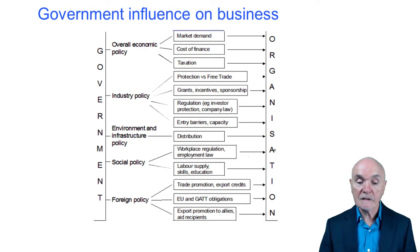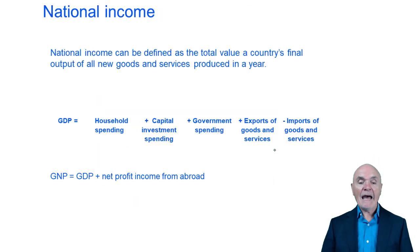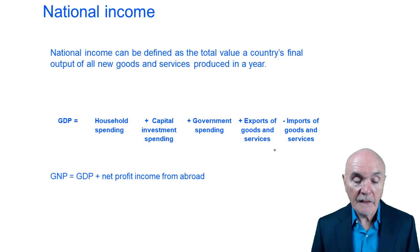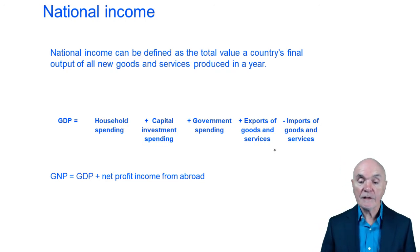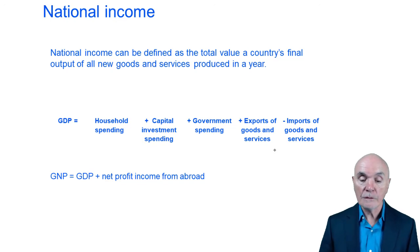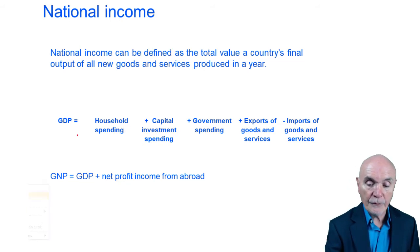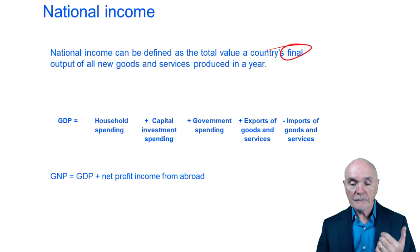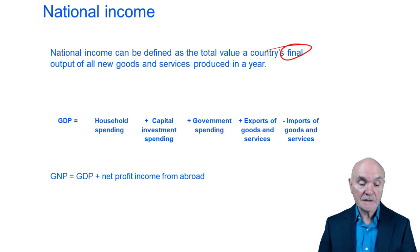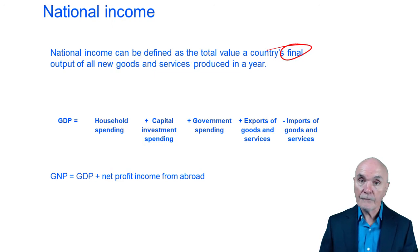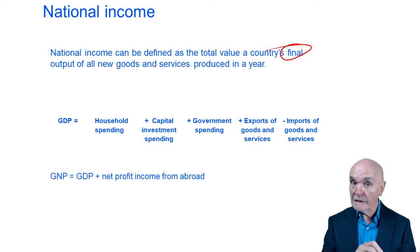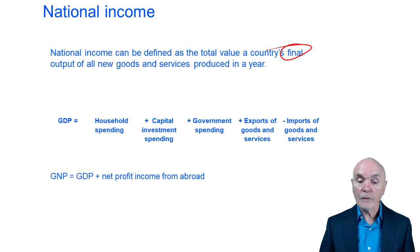So there's a myriad of ways in which the government can influence the economy and businesses. Now, how is income measured? National income is defined as the total value of a country's final output for all new goods and services. It's important that we remember it is final output. Because if a company buys raw materials and incorporates that into a product, then sells it to a member of the public, you're double counting the raw material element. So it is the final output of all new goods and services.